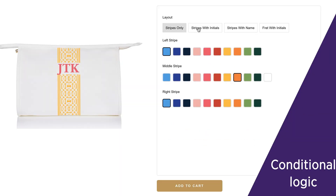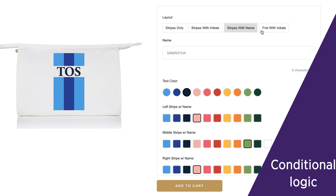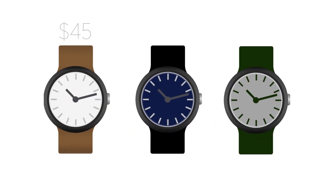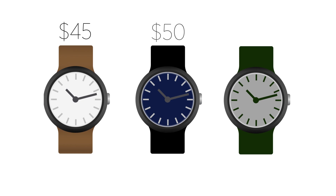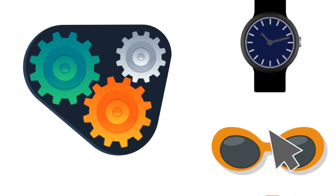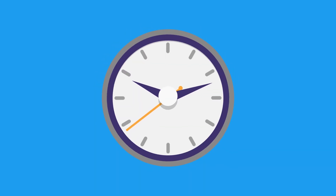Conditional logic allows you to set up a complete product building experience with live preview. Setting the price per option feature allows you to recover your cost. You can also use bulk actions for configuring products and save time managing large volumes of products.